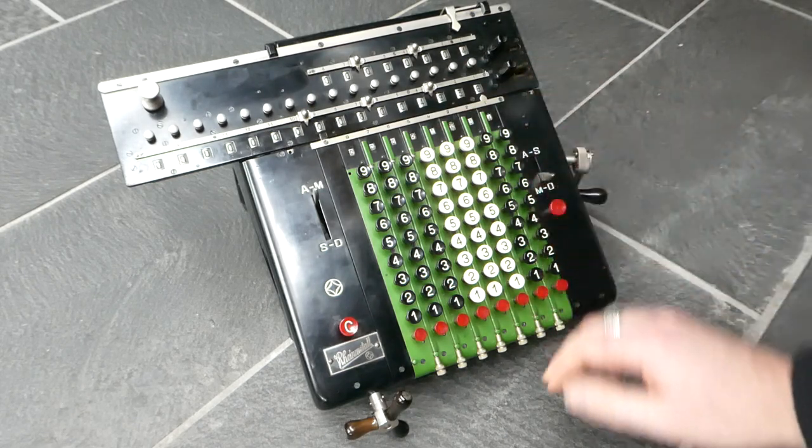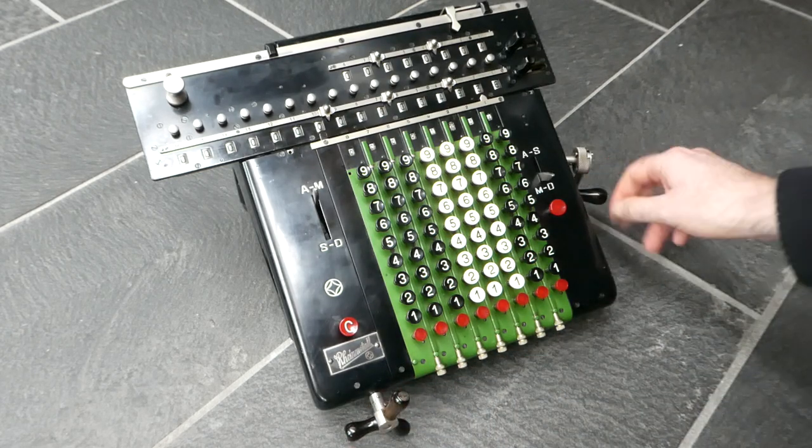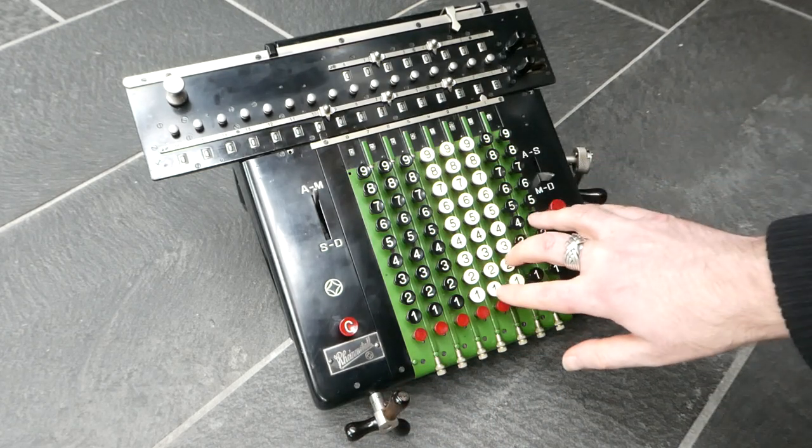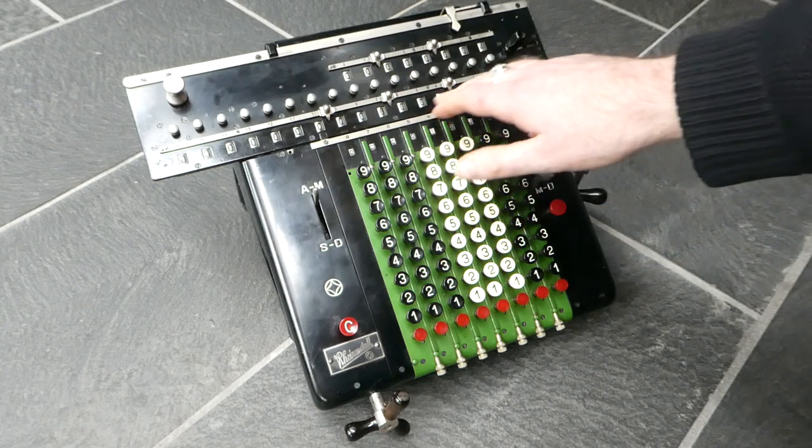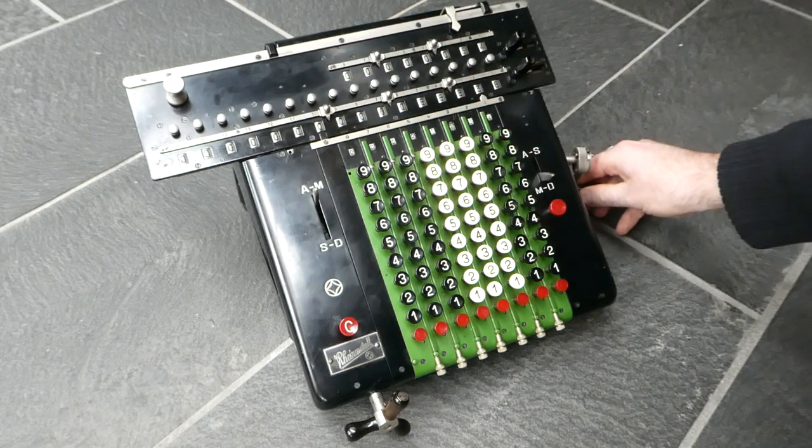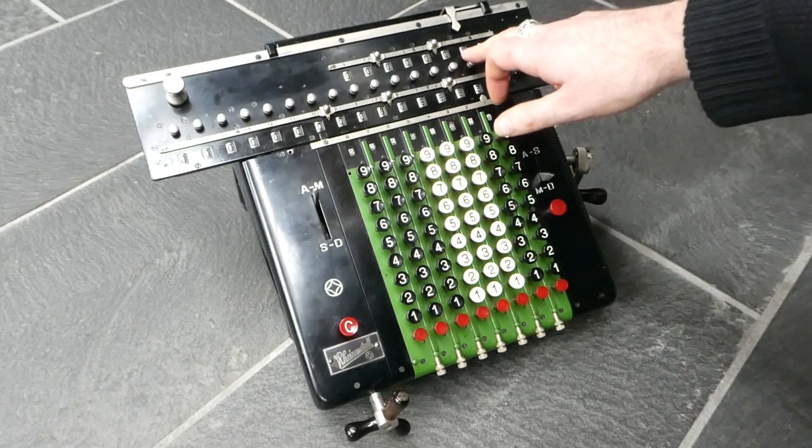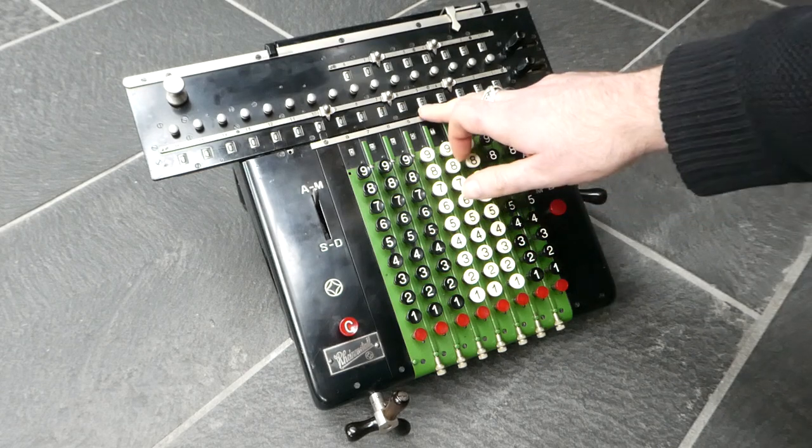To shift the carriage you can turn this knob here and then multiply the number again for the next digit. So I have now multiplied this input number by 54. And this is the result.